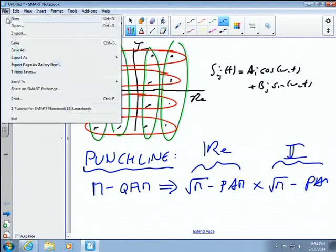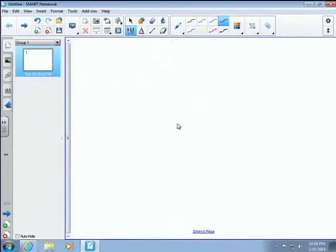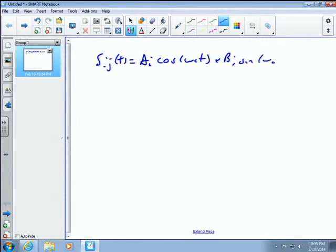Here comes our signal, an M-ary QAM signal, and the first thing we do is we multiply it with cosine omega_c T in one branch, and sine omega_c T in another branch. And you might say, why are you doing that? Here's the reason why. Take that signal S_ij of T, equal to A_i cos omega_c T plus B_j sine omega_c T.